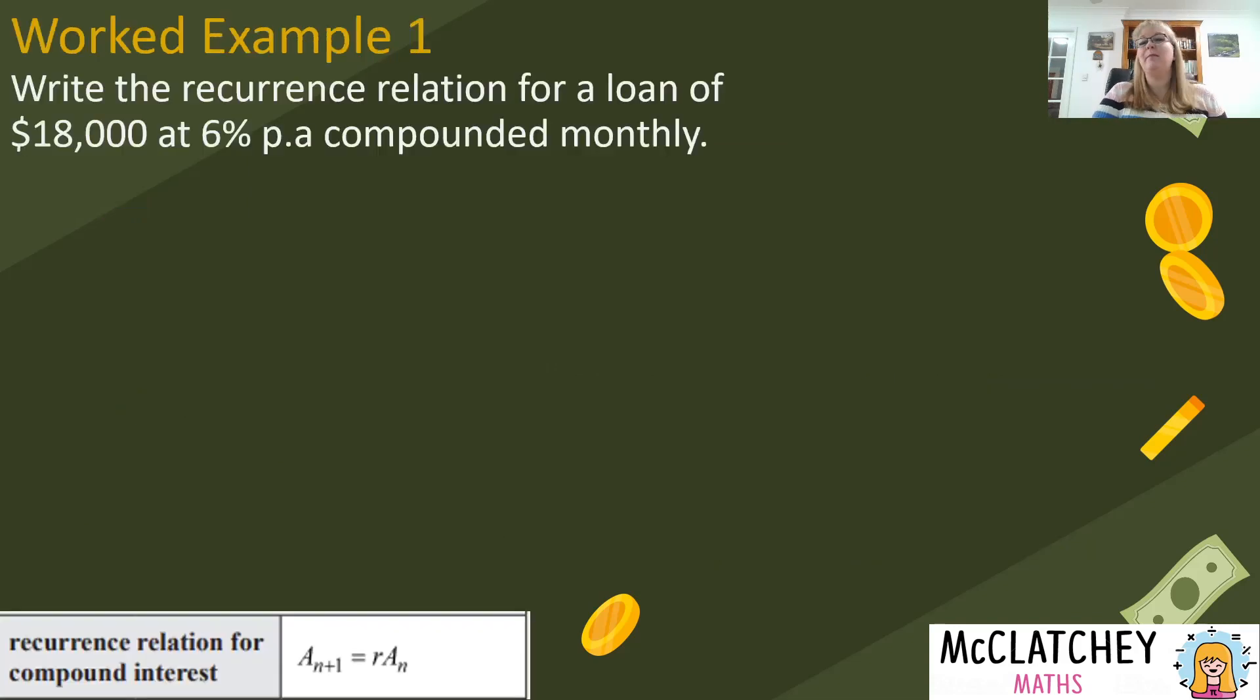Okay let's do some worked examples. Hopefully this will make things become a lot clearer. So write the recurrence relation for a loan of $18,000 at 6% per annum compounded monthly. Okay so we've got our formula at the bottom of the screen but we should always write the formula as well and we're adding a 0 on there. Okay so we're starting off with a blank template. Now we need to substitute into that formula but state some variables first before you jump straight into substitution because you want to make sure that you've got the value of r correct before you start putting numbers into an equation.